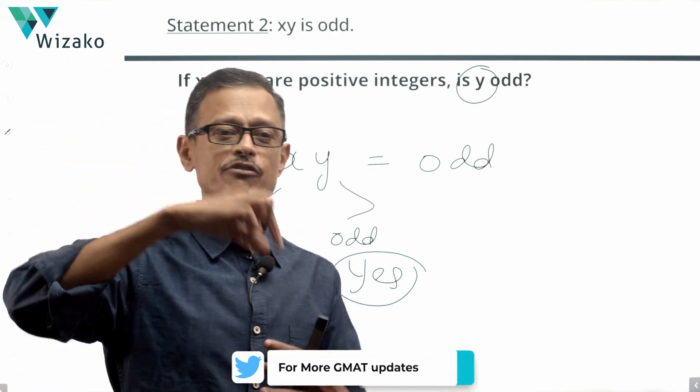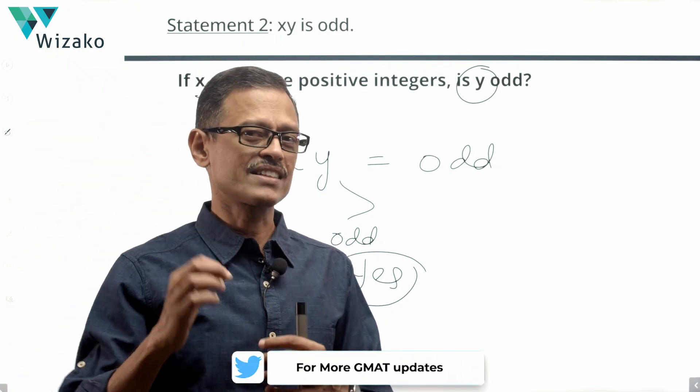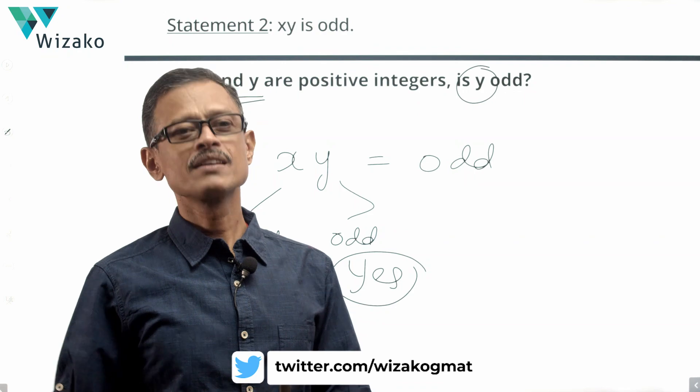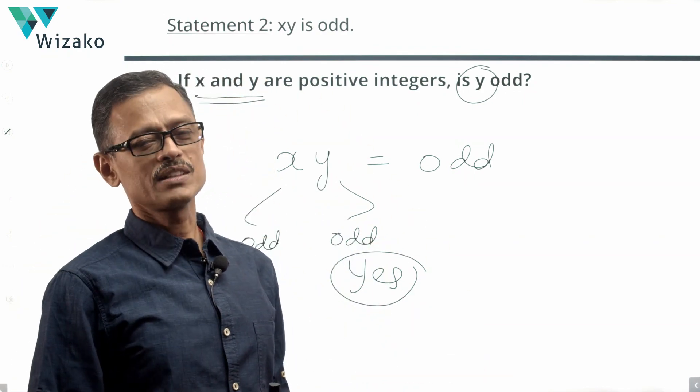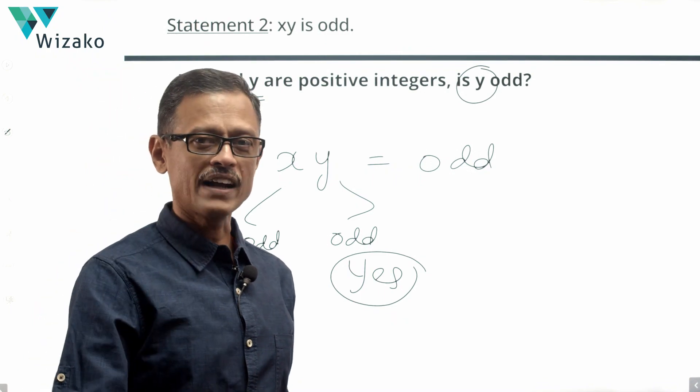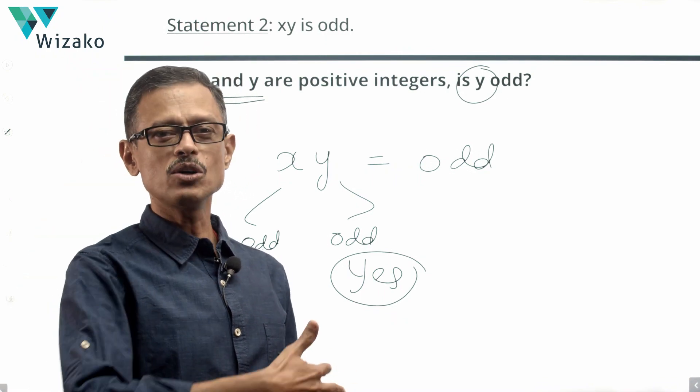That's a trap in this question. The point is, if x and y are positive integers, the product can be odd only when both those numbers are odd, which points to the fact that with statement two alone, without taking any help from statement one, we can determine y is odd.